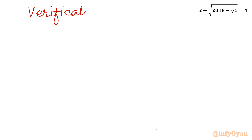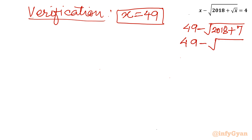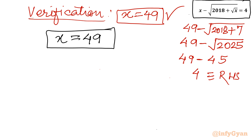Let us verify fully: substituting x = 49, √x = 7, so 49 minus √(2018 + 7) = 49 − √2025 = 49 − 45 = 4, which equals our RHS. So x = 49 is the true and correct solution. The integer solution of this given radical challenging equation is x = 49. I hope this video will be meaningful to you. Do not forget to like, share, and subscribe. Bye-bye till next video, good luck and take care of yourself.